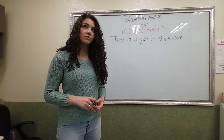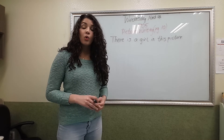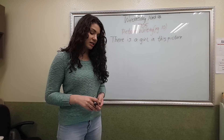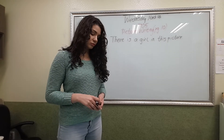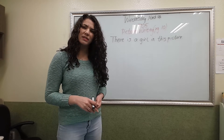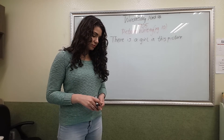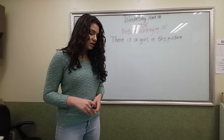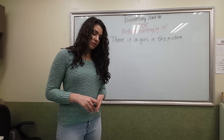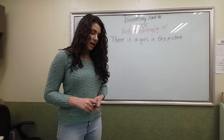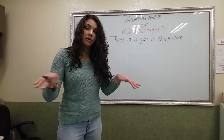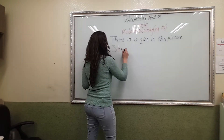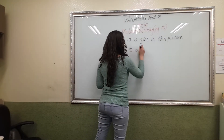Let's continue by talking about where she is. Where do you think this girl is? Is she at school? Is she outside? I think she's at her house. I can tell that because she has a dog with her and she's at a front door. It looks like she is on the welcome mat outside her home. So I'm going to say: 'She is at her house.'